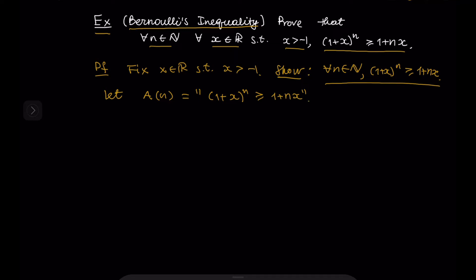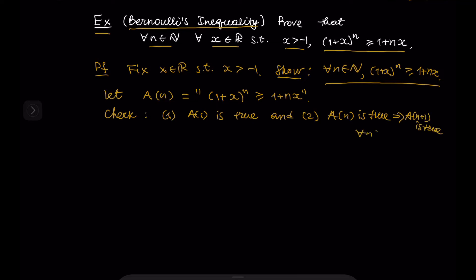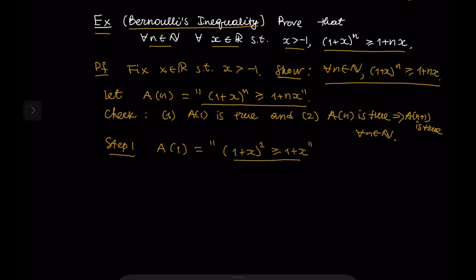To prove A(N) is true for all natural numbers N, we check two conditions. Step one: we check that A(1) is true. Plugging in N = 1, the statement becomes (1 + x)^1 ≥ 1 + x, which is 1 + x ≥ 1 + x. This is clearly true. So the first condition holds.